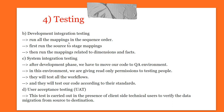System integration testing: after the development phase, we move our code to the QA environment. QA means quality assurance. In this environment, read-only permissions are given to the testing team. They test all workflows and test our code according to their standards. They also perform user acceptance testing, which is carried out in the presence of client-side technical users to verify data migration from source to destination.